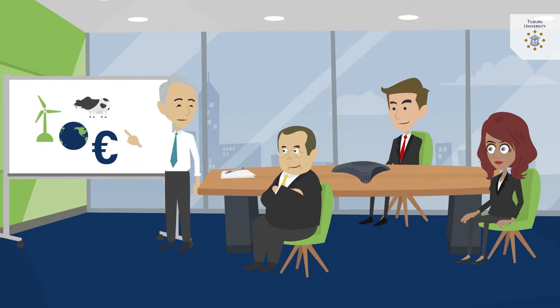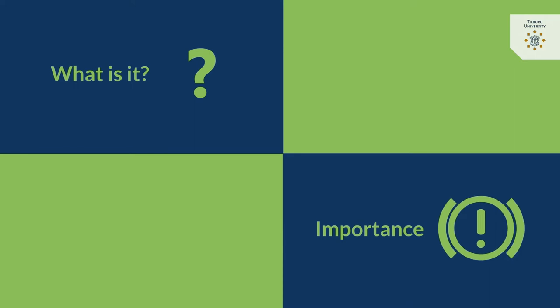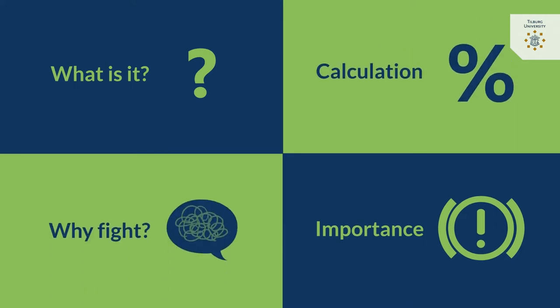Economists who want to advise their governments on climate policy often talk about the social cost of carbon. What is that? How is it important? How do they calculate it? And why do they fight over it?